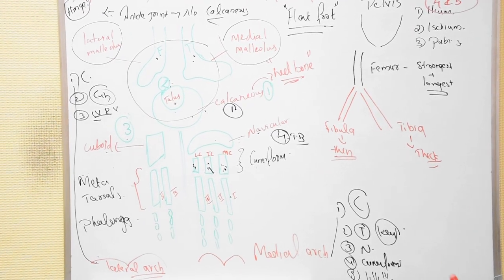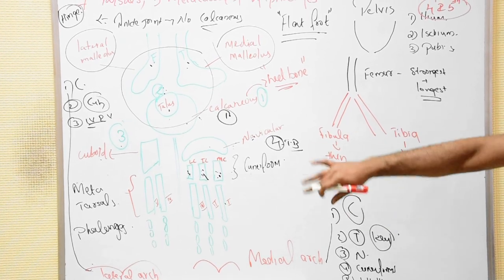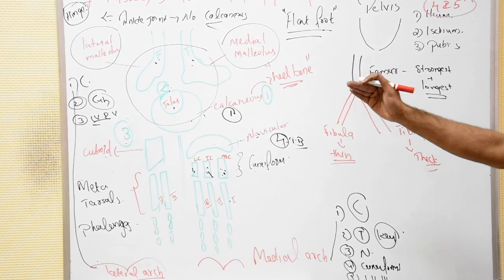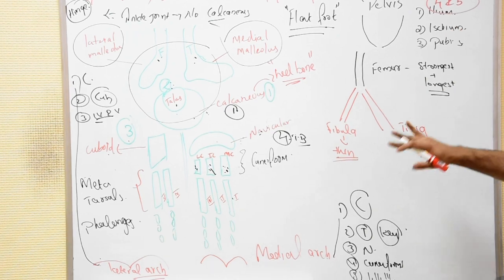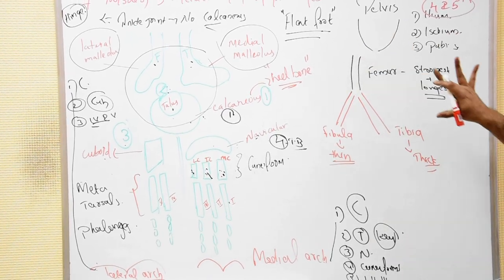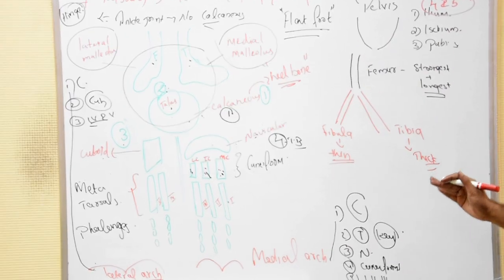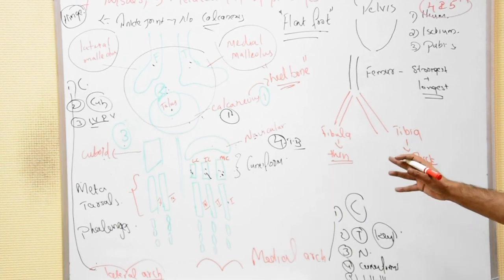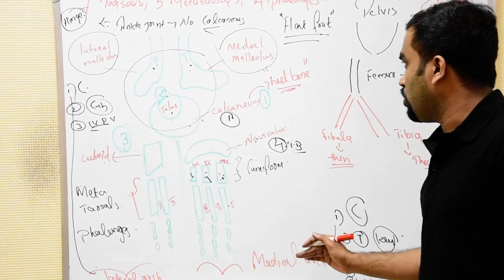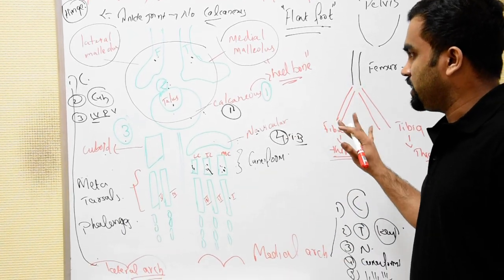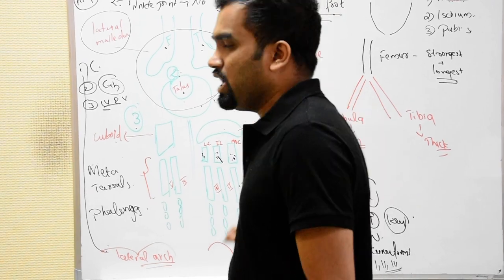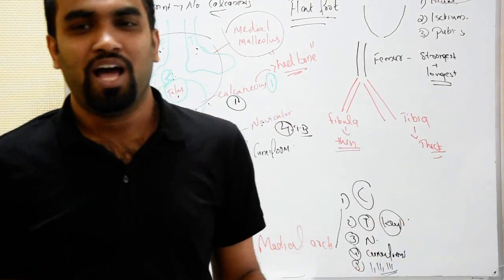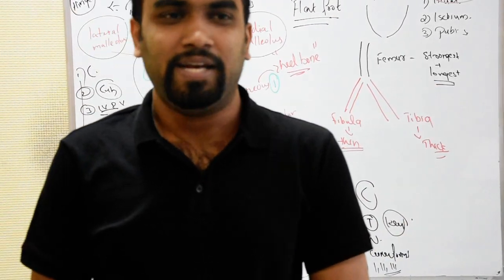So we have talked about the medial arch, the lateral arch, the tarsal bones, the metatarsals, and the phalanges. This was a brief introduction to the bones of the lower limb. Next, we will go to each joint in detail, starting with the knee joint, which is very important.